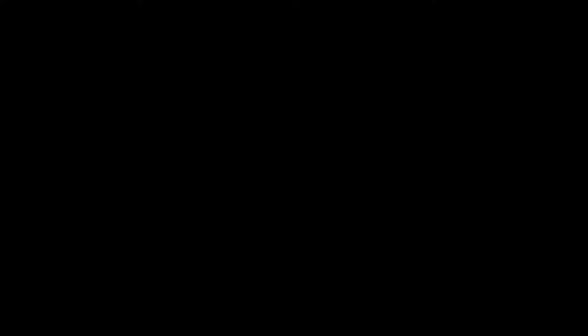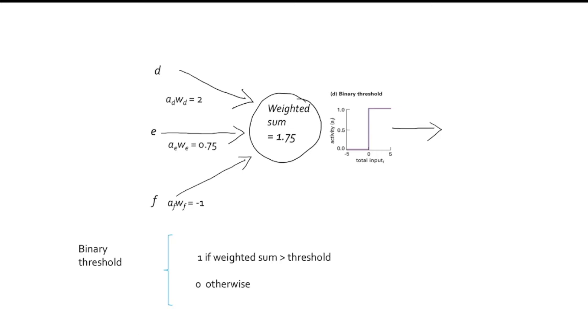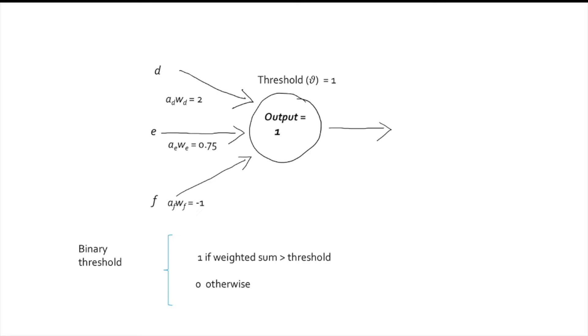The previous expression is short for the full sum. We're not done yet. In the kind of model we are reviewing, the activation level for the unit is arrived at by applying the activation function to the weighted sum of the inputs. One activation function, associated with Rosenblatt's perceptrons, is the binary threshold function, which says that if the weighted sum, or net input, to the unit is larger than a given threshold, then the activation or output is 1, and otherwise it is 0. So, if we assume that the threshold is 1, then the output, in the form of the activation value of this unit, is 1.